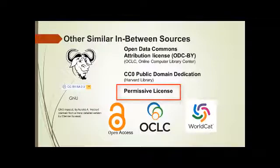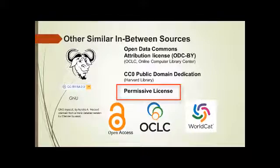A major difference between permissive and copyleft free software licenses is that, when software is being redistributed — either modified or unmodified — permissive licenses do not force the redistributor to open the modified source code. Copyleft licenses enforce the publication of the source code under the copyleft license.